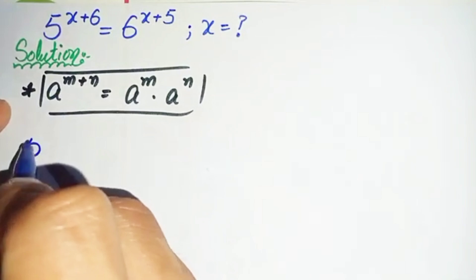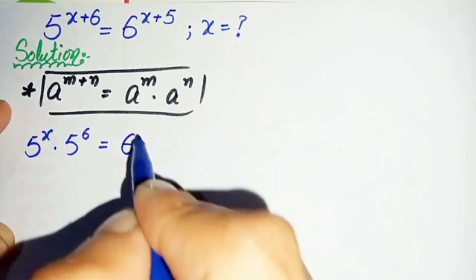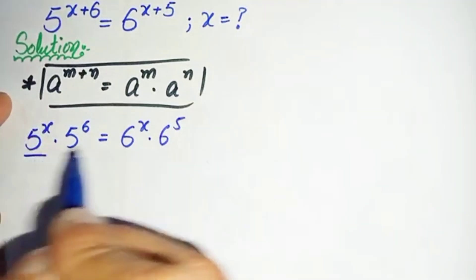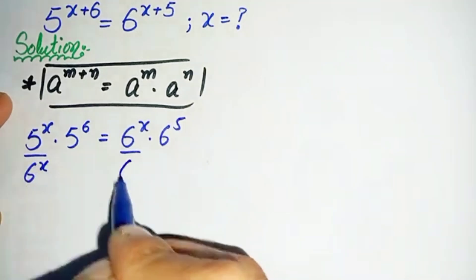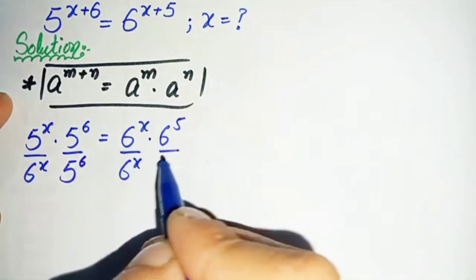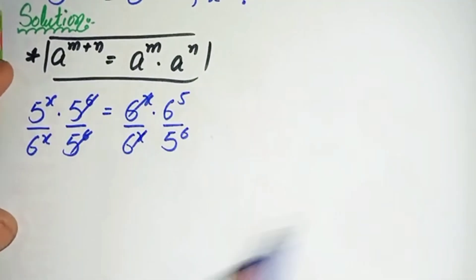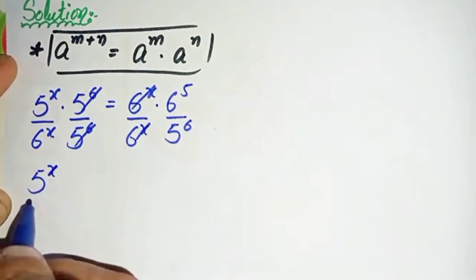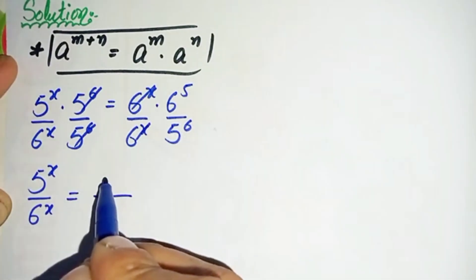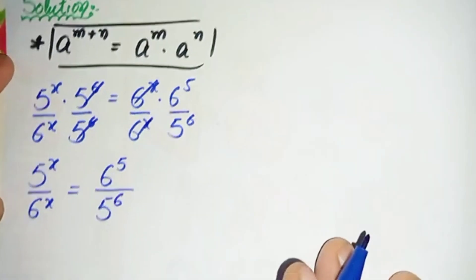Using this exponential property on both sides of the equation, it will become: 5 raised to power x times 5 raised to power 6, is equal to 6 raised to power x times 6 raised to power 5. Here we will divide both sides — dividing by 6 raised to power x and by 5 raised to power 6 — so those terms cancel, leaving 5 raised to power x divided by 6 raised to power x on the left-hand side.